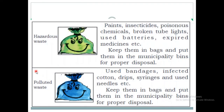Next is hazardous waste. Examples of hazardous waste are paints, insecticides, poisonous chemicals, broken tube lights, used batteries, and expired medicines. These have to be kept in bags and put in the municipality bins for proper disposal.